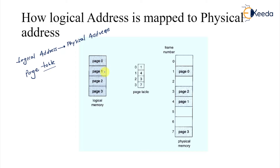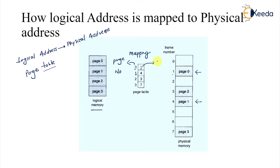So here we have page 0, page 1, page 2, page 3 — this is your logical memory. We have a page table which is performing this mapping. For example, page 0 is mapped to frame 1, and logical page 1 is mapped to frame 4. Each entry in the page table is the frame number. The zeroth page number is mapped to frame number 1, so you go to frame number 1 to get that address.